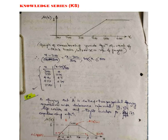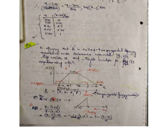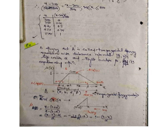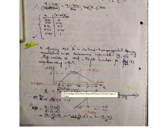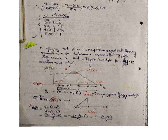A fuzzy set A is called a trapezoidal fuzzy membership function with tolerance interval [A, B], left width alpha, and right width beta. The membership function has a core from A to B where membership equals 1, a left boundary from (A − alpha) to A, and a right boundary from B to (B + beta).